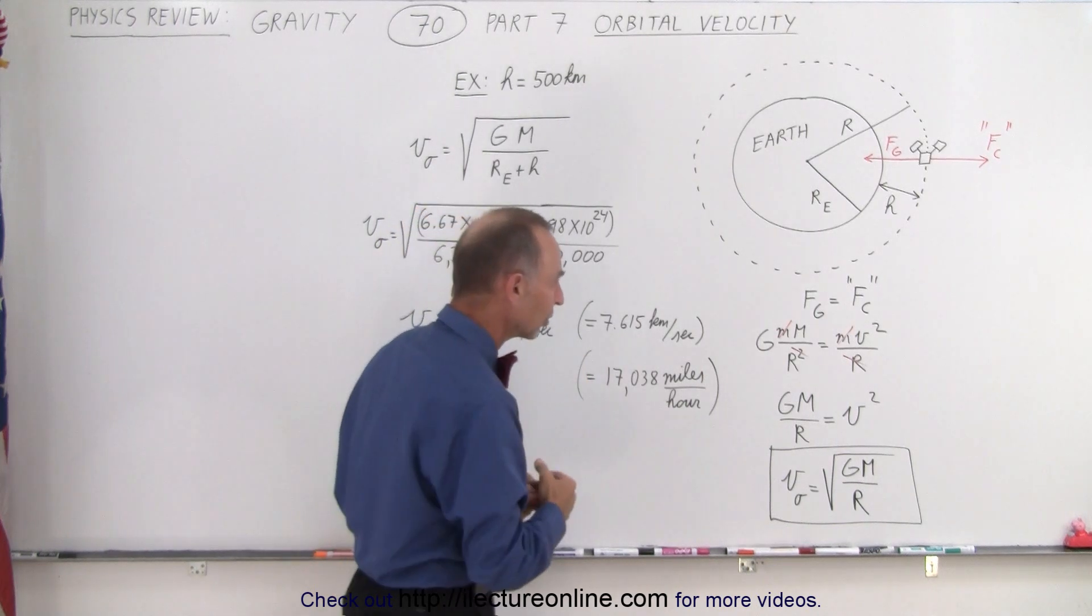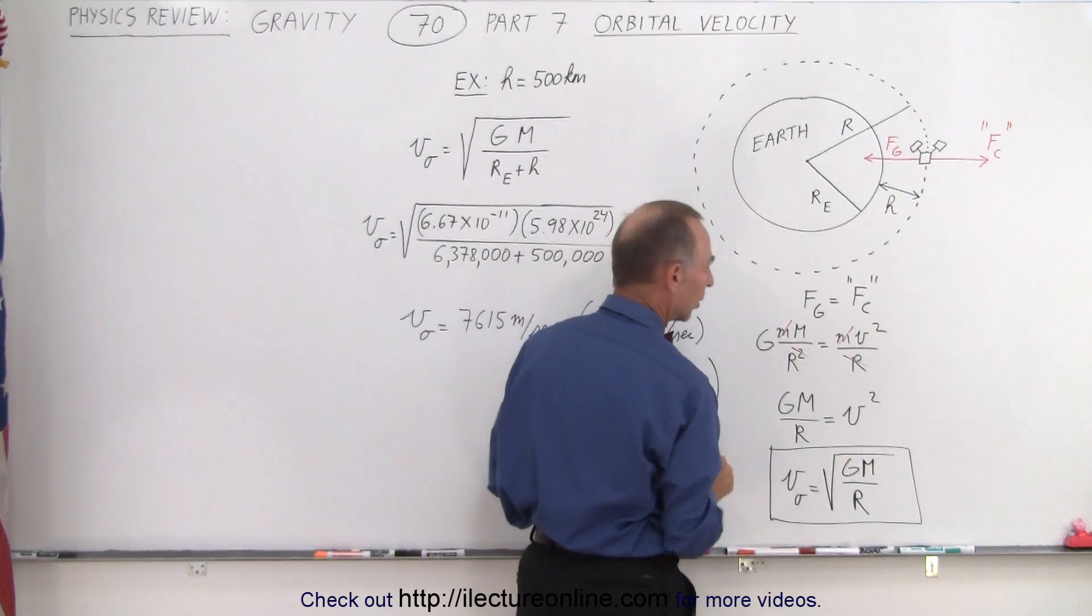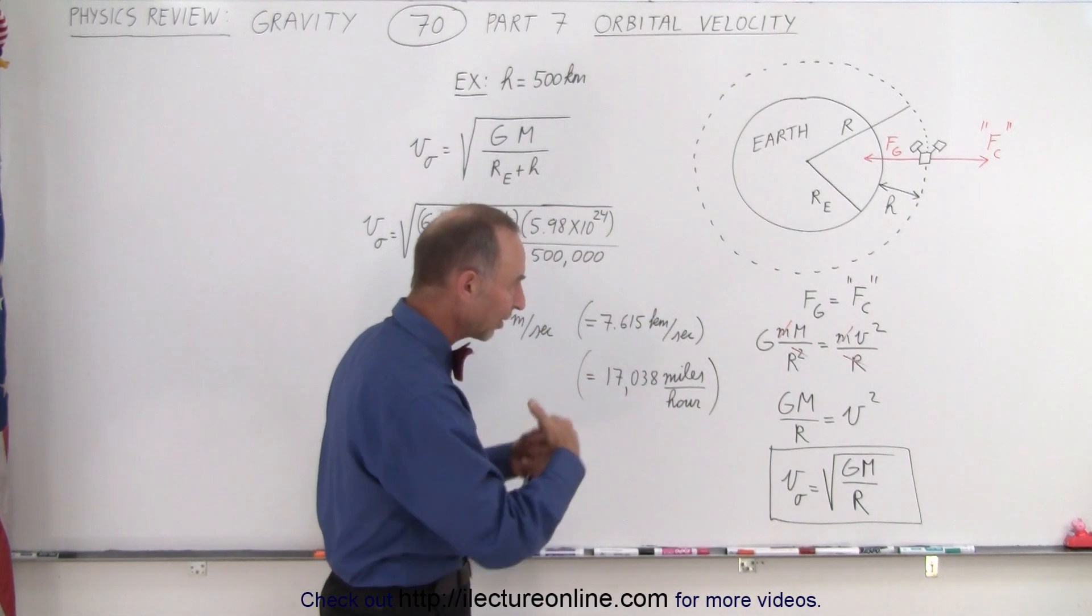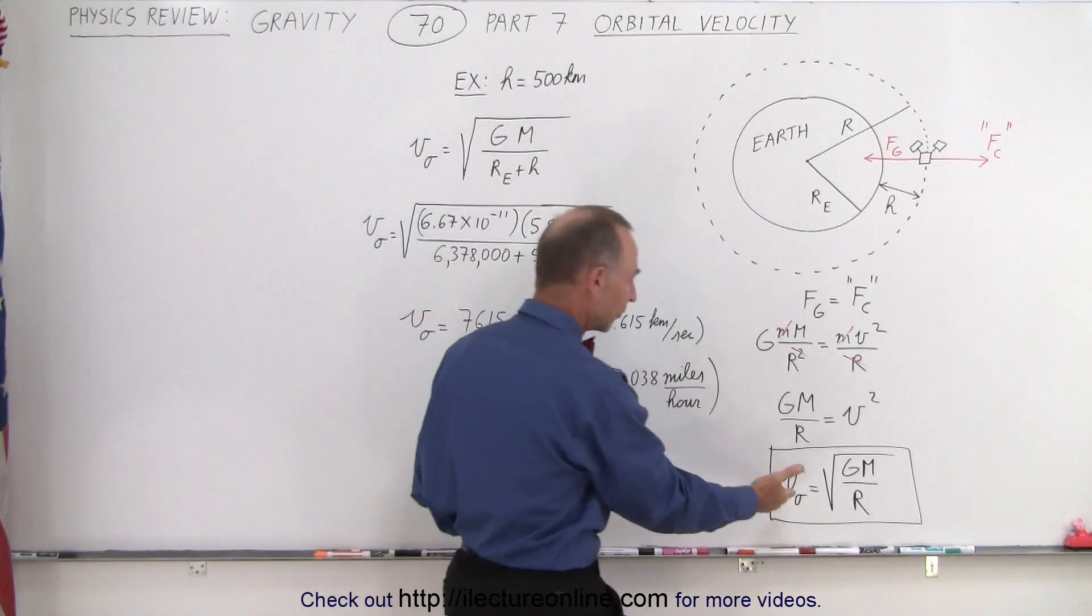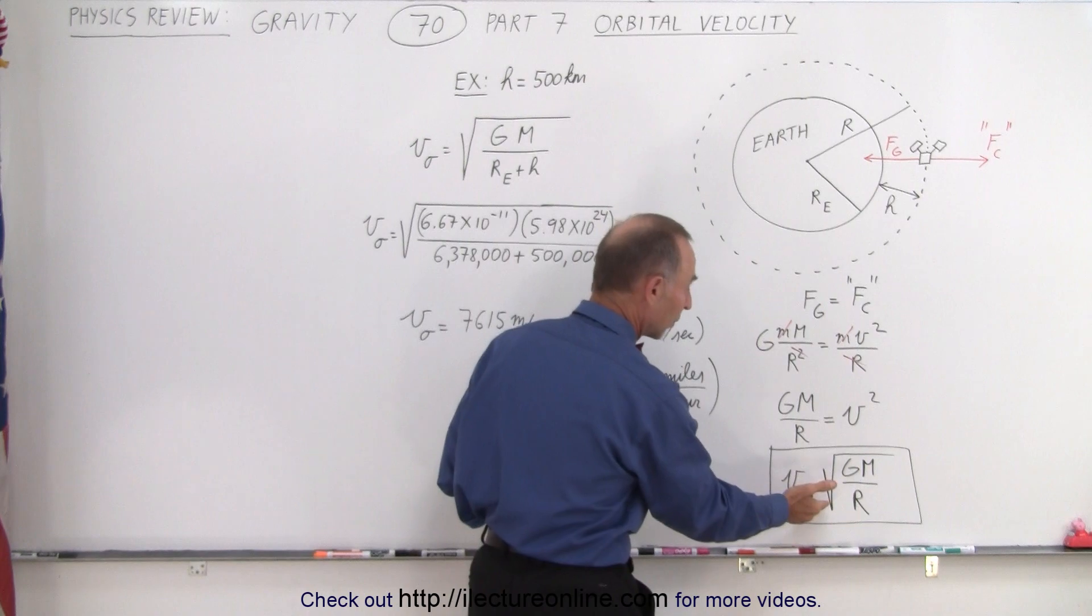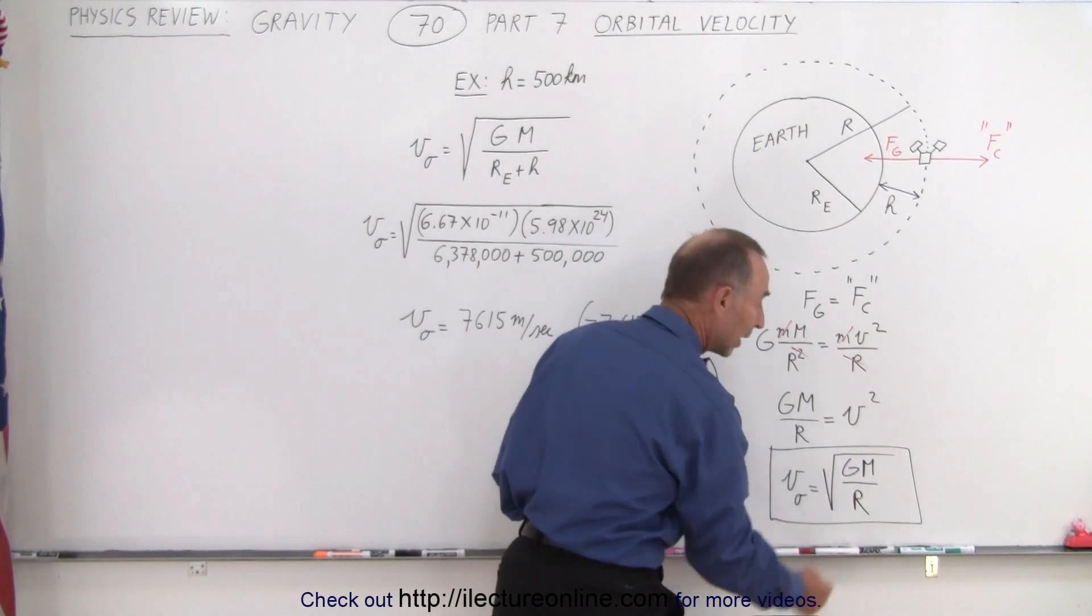So when we set them equal to each other, we have the equation of gravity set equal to mv squared over r, which is the equation for the centripetal force. If we then simplify the equation and solve for v, that becomes the velocity of the orbit, which is simply the square root of g times the mass of the Earth divided by the radius of the orbit.